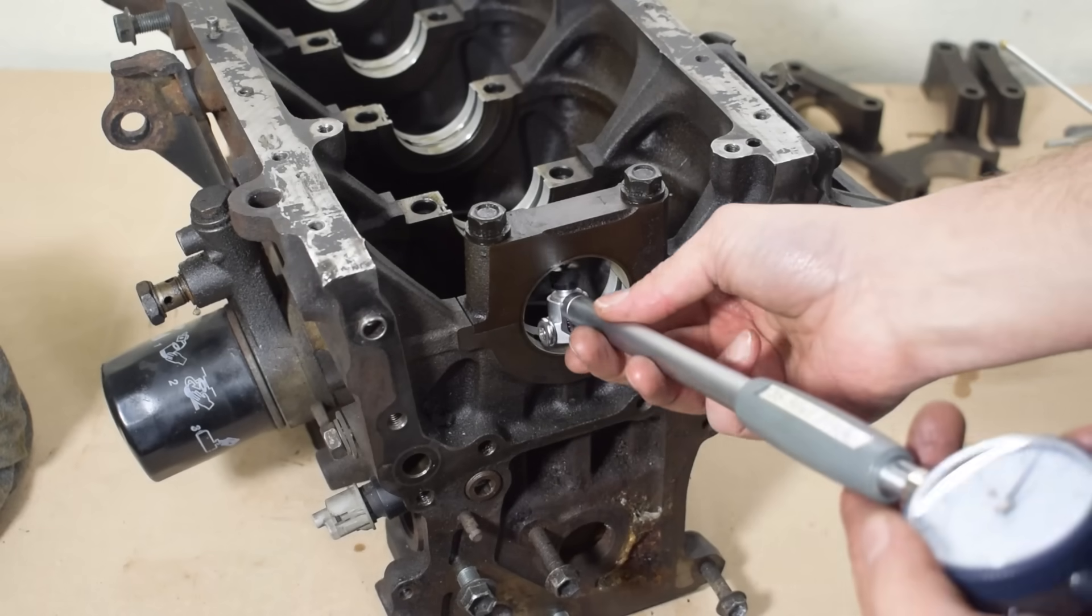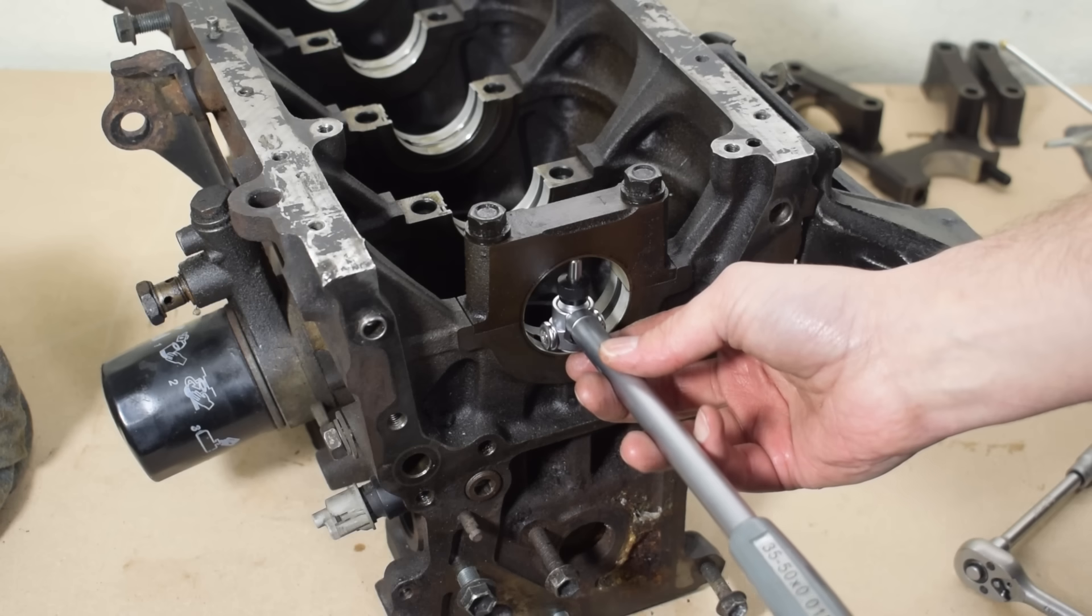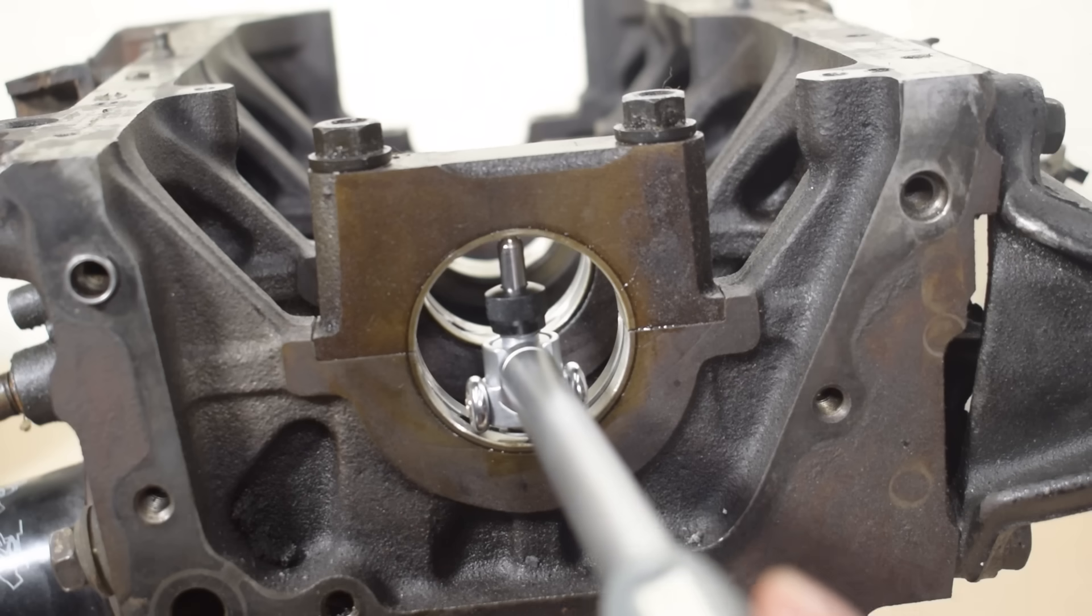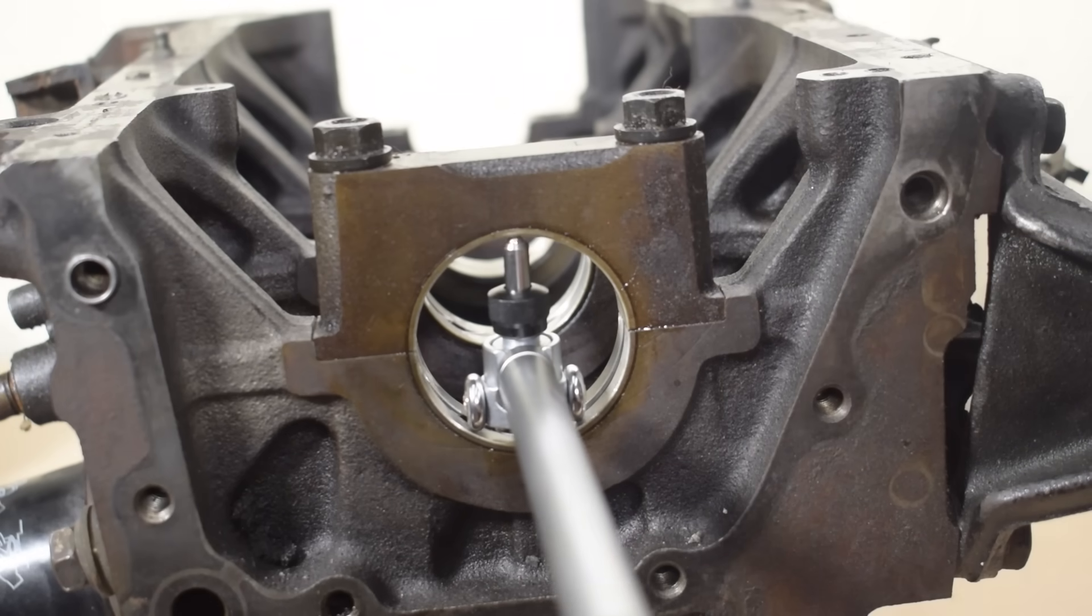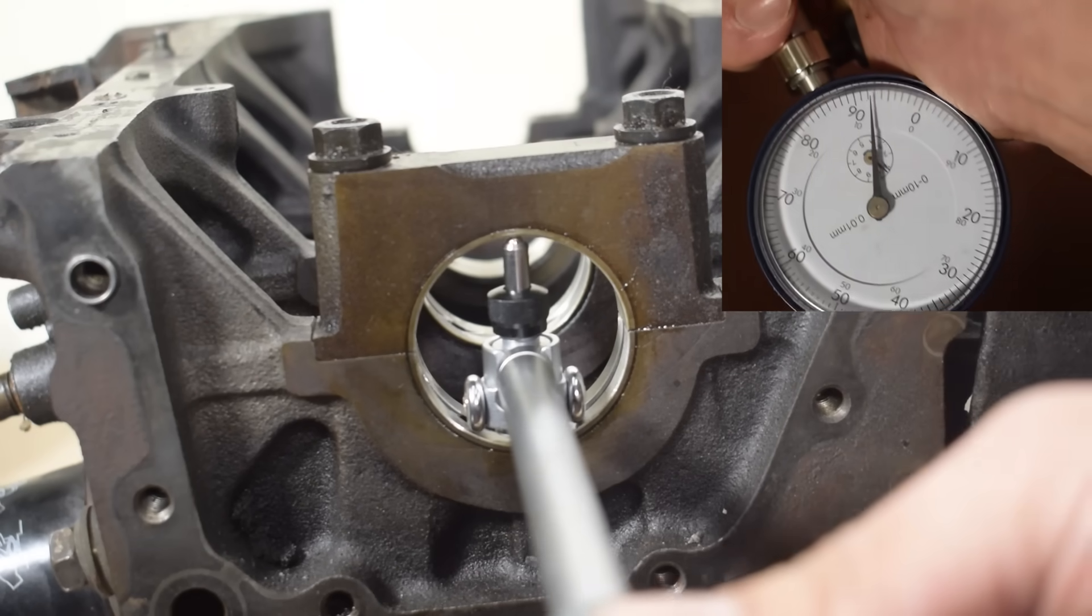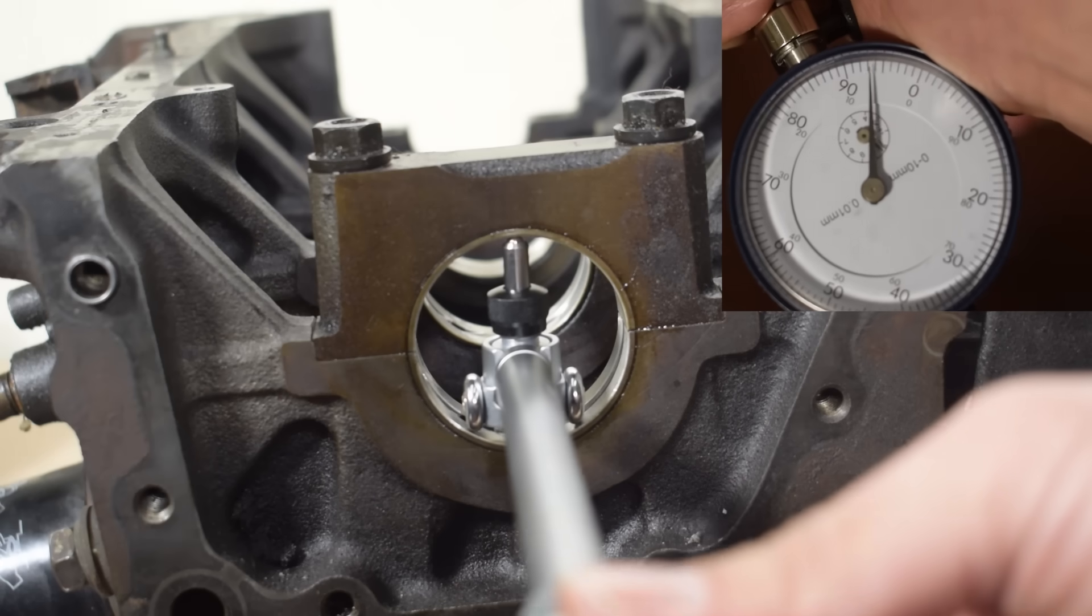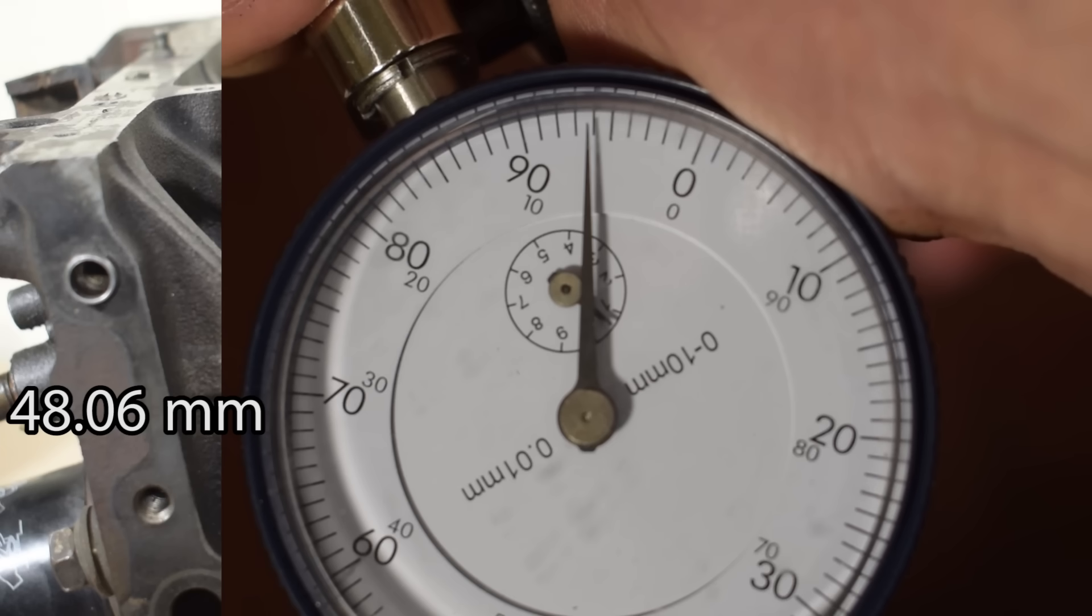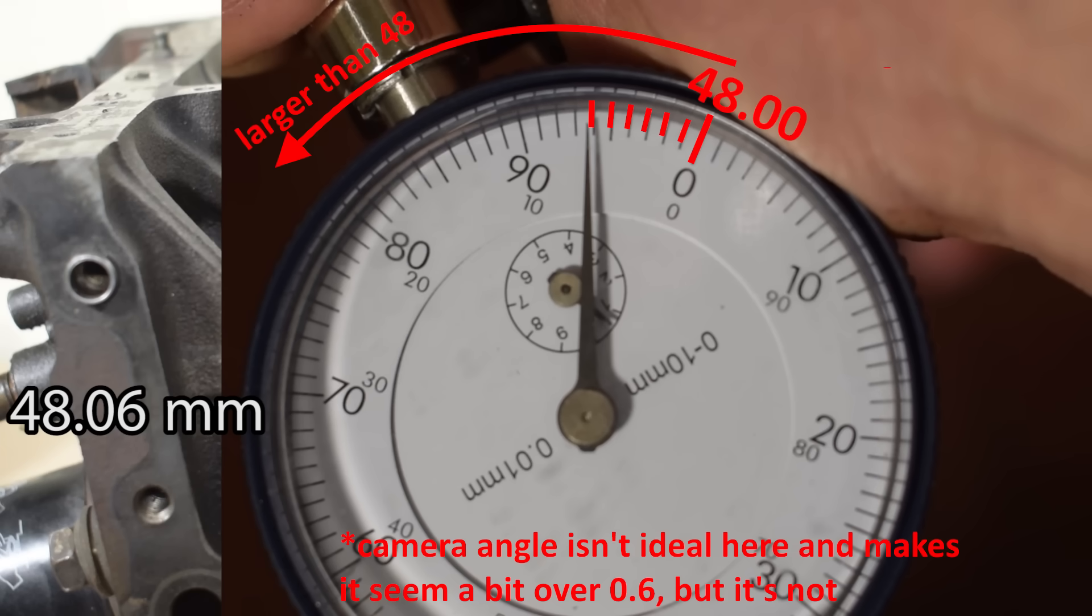Once we have zeroed our gauge, we will measure at six different locations. We measure by moving the bore gauge gently back and forth and observing the furthest point reached by the needle. The first and most important location is a vertical measurement perpendicular to the bearing parting line. The value obtained at this measuring location is the value we'll be using for our bearing clearance. As you can see here, our measurement is 48.06 millimeters. Our zero is 48 and everything before it is how much the bore is larger than 48 millimeters. Each individual line on our gauge face represents 0.01 millimeters.